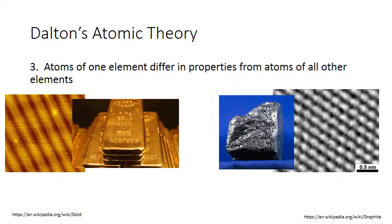The third part of Dalton's theory is that atoms of one element differ in properties from atoms of all other elements. So consider the differences between the two elements, gold and carbon. One is a malleable metal that can be worked into shapes like these gold bars. It's relatively inert as well, meaning it really doesn't react with much in nature.